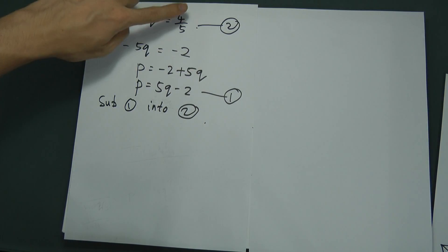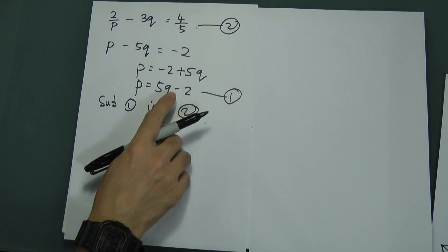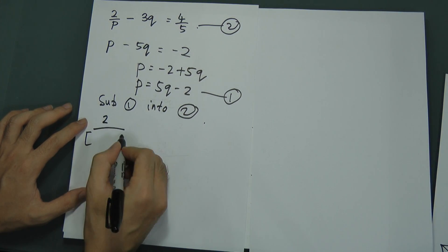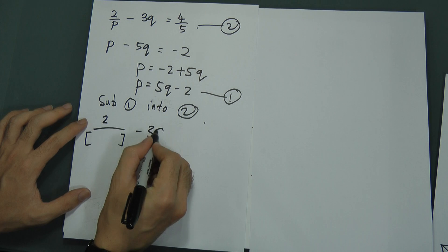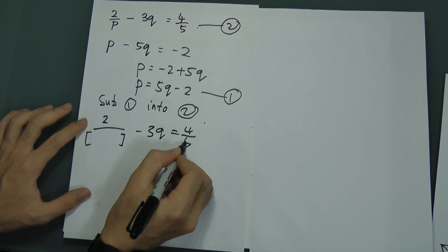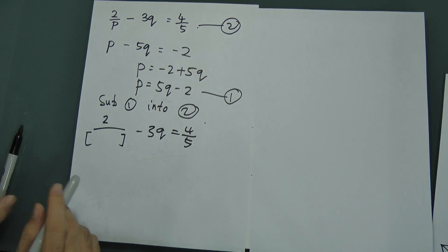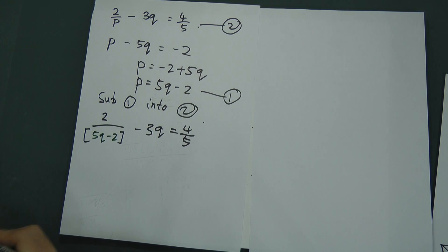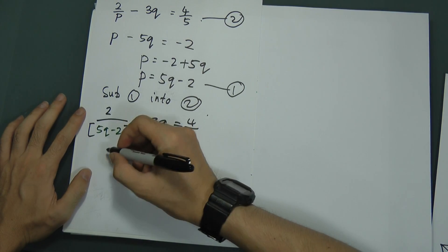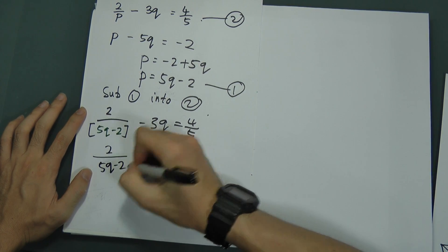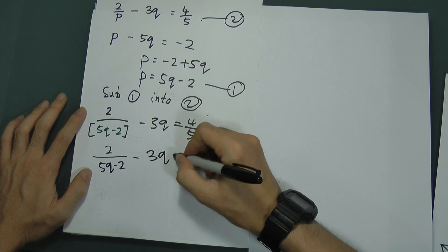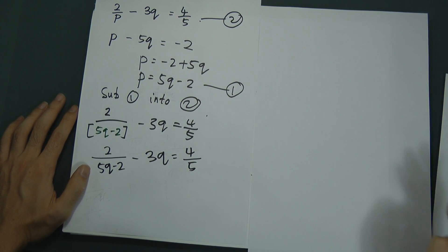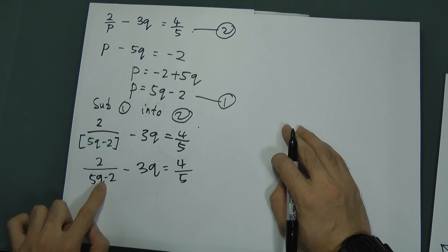Substituting equation 1 into equation 2: equation 2 is 2 over p minus 3q equals 4 over 5. Replacing p with (5q minus 2), we get 2 over (5q minus 2) minus 3q equals 4 over 5. Now we have 5q minus 2 in the denominator and 5 in the denominator on the right side — this gets a bit complicated.